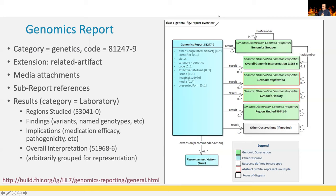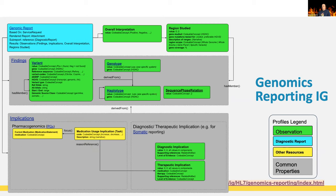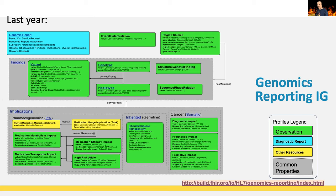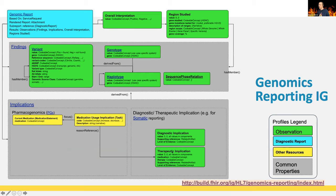The overall representation of the Genomics Reporting IG has been simplified since last year. The implications field especially was reworked — previously implications were collected by asking people what was important in their use case: pharmacogenomics, germline, somatic. We discovered all of this could be merged into a diagnostic and therapeutic implication for now. Pharmacogenomics also uses these implications, adding medication statements and medication usage implication as a Task resource.